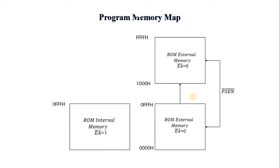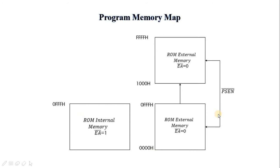The next topic is memory organization of AT51 microcontroller. The total memory of an AT51 system is logically divided into two memory sections: the first is program memory, and the second is data memory. Program memory is ROM type and stores the program to be executed.